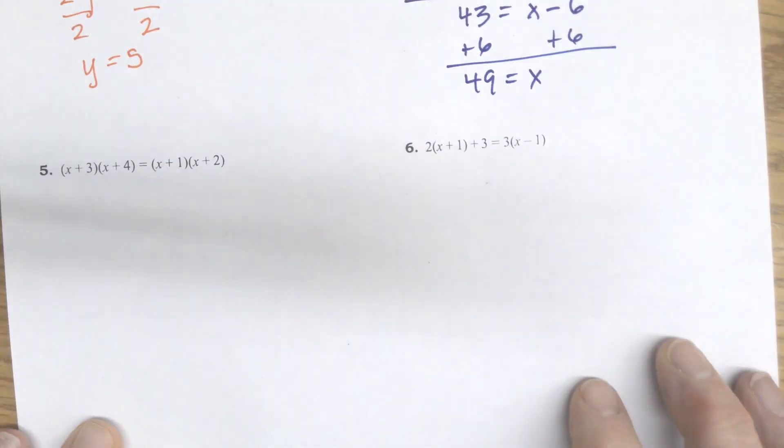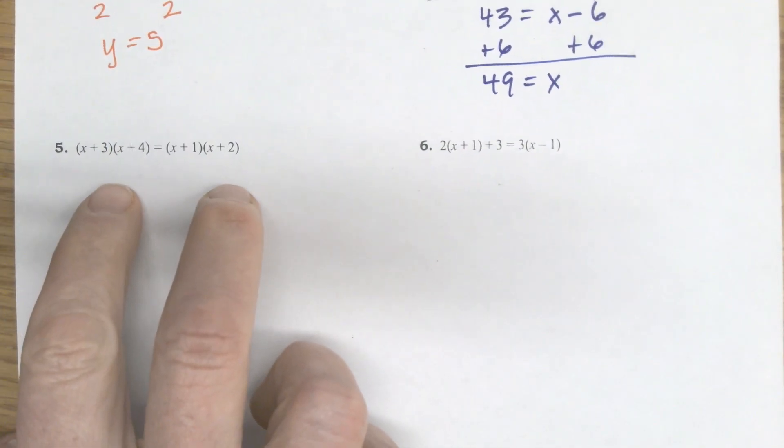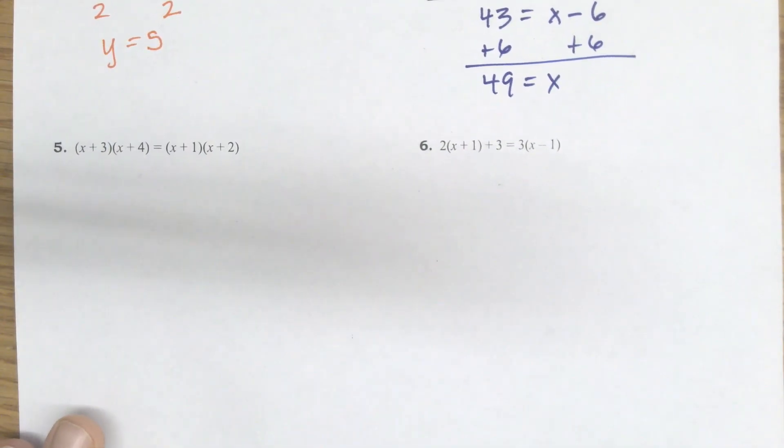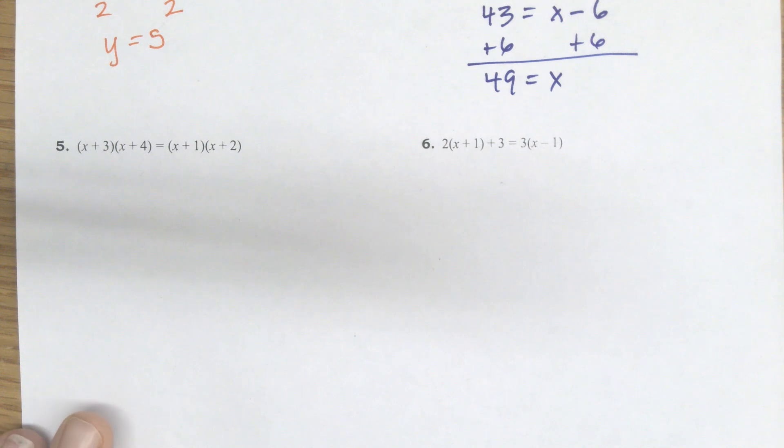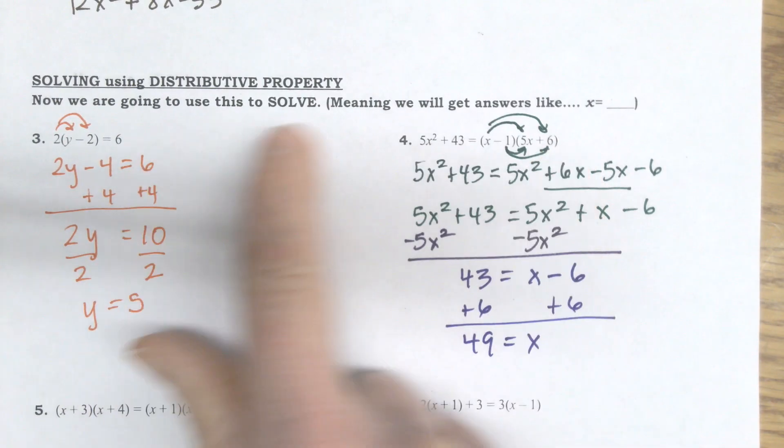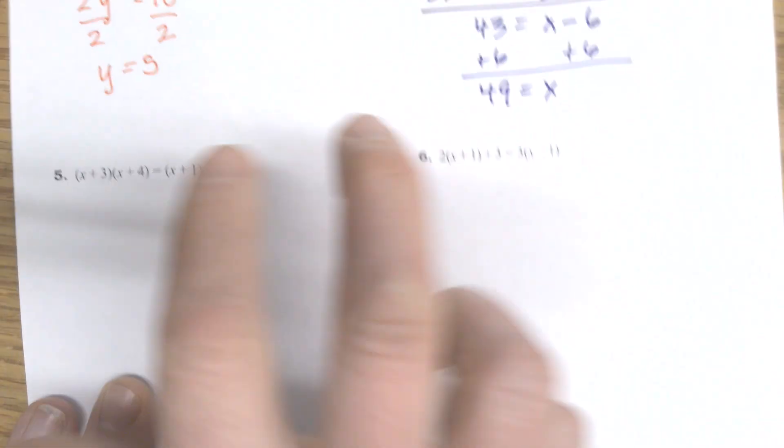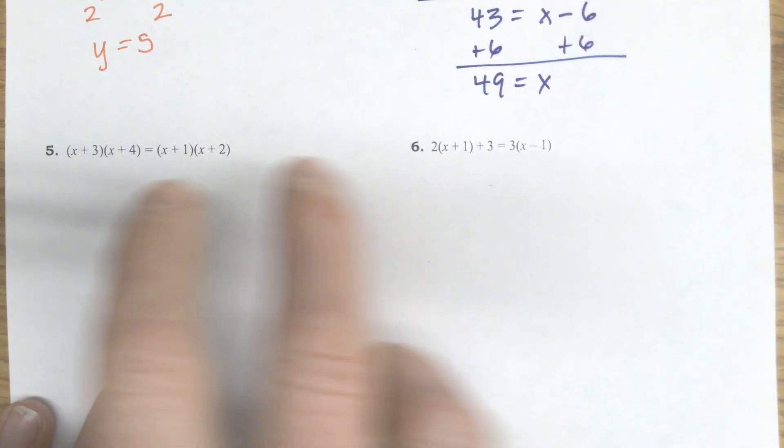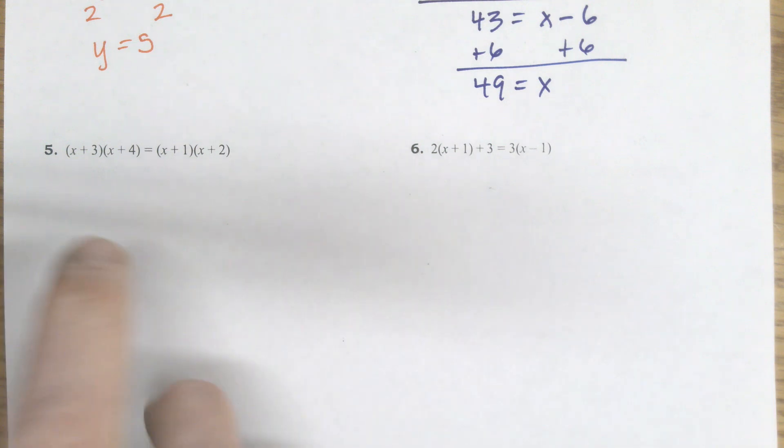Moving on for 5 and 6. Sometimes in 5, I'm going to have like a double distribute. I'm going to have more distributing there than just like one time in that previous problem or the previous two, just one. Now I have a double distribute. I have to do it twice, once on each side. Sometimes I might even have to do it twice on one side. It just depends on the problem.